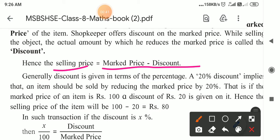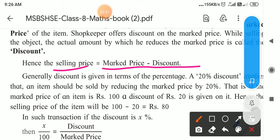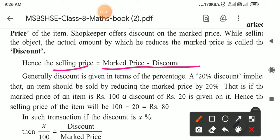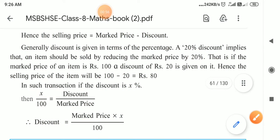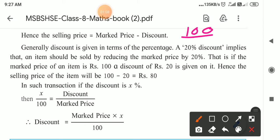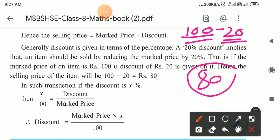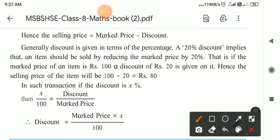Generally, discount is given in terms of percentage. So yesterday I told you how to find out the percentage. A 20 percent discount means — suppose the marked price, which is the price printed on that material, is 100 rupees and they are giving 20 percent discount, then 20 rupees they make less and the article is sold for 80 rupees.